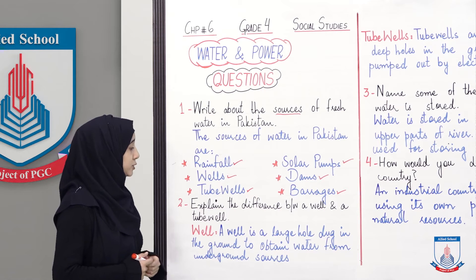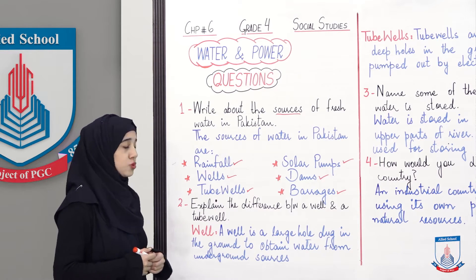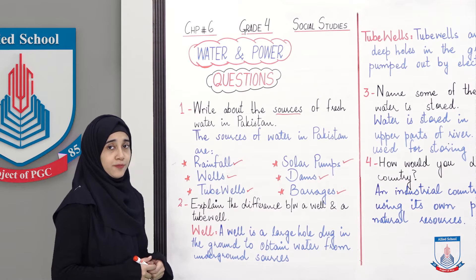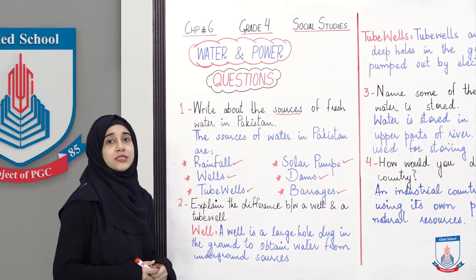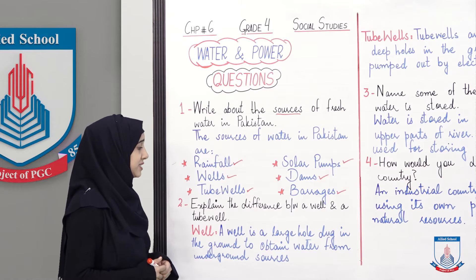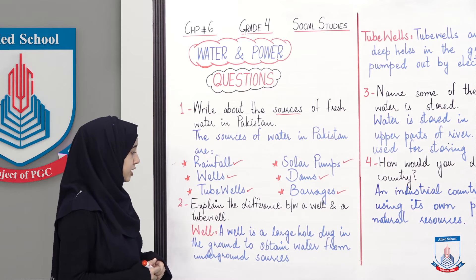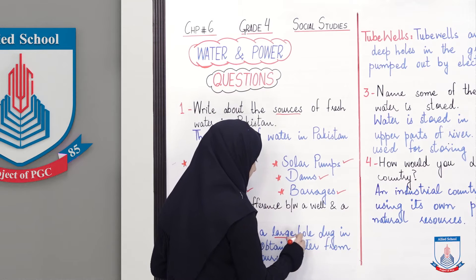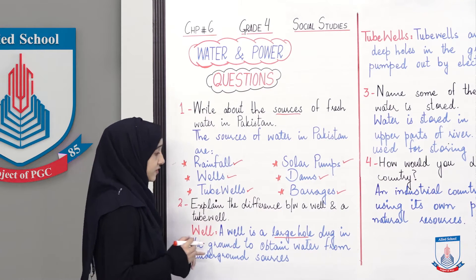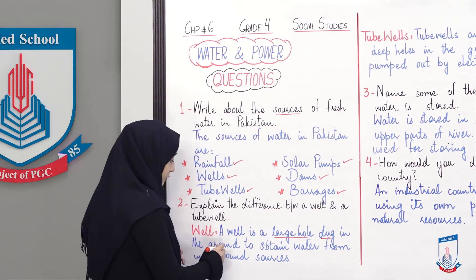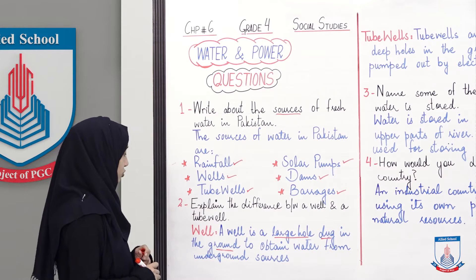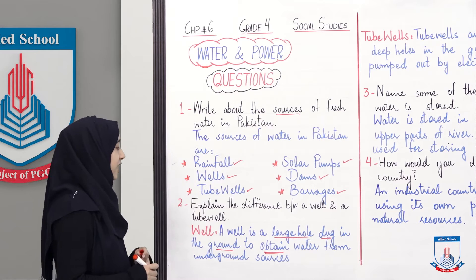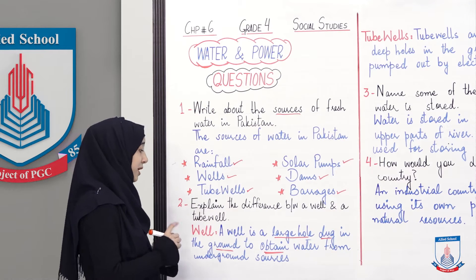Question number two is: explain the difference between a well and a tube well. Ab usne aap se poochha hai ke aap difference batau between a well and a tube well. So, hum pehle baat kar lete hain that what is a well. A well is a large hole dug in the ground to obtain water from underground sources. It is a large hole, ek bada sa hole dug in the ground, zameen mein, to obtain water from underground sources.